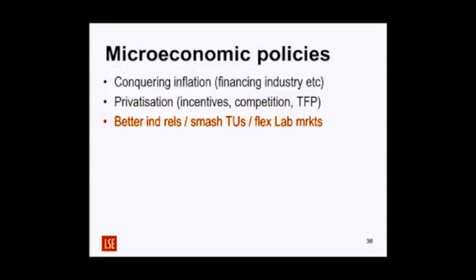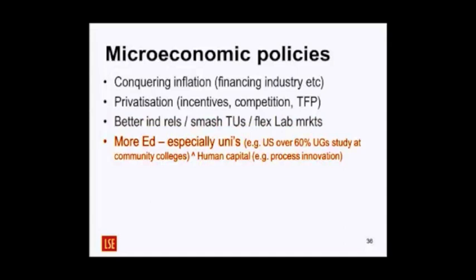Better industrial relations — or, depending on your political perspective, flexible labour markets, or smashing the trade unions — the unions really were completely smashed and have lost all their power. More education is counterintuitive for Thatcher, but during the Thatcher-Major period we saw a massive expansion in higher education, a proliferation of universities. One thing we've come across again and again in this course is that education has been a problem in Britain, particularly for process innovation — higher education gives you the ability to adjust rapidly to new ways of doing things.